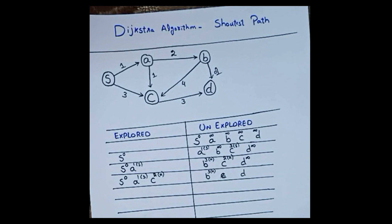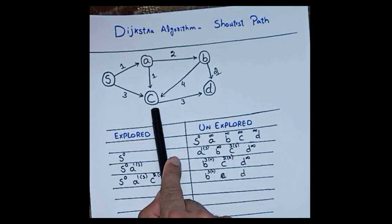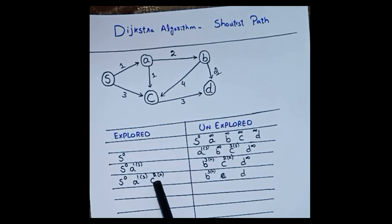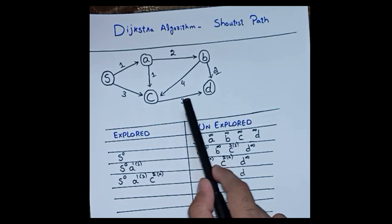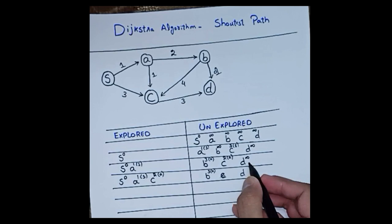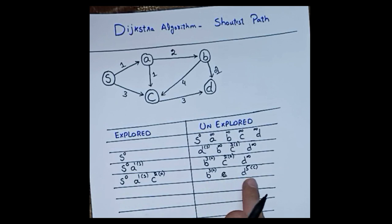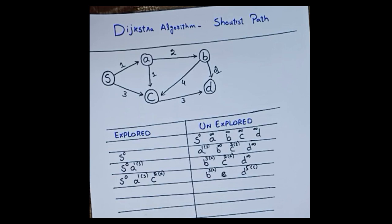What about D? I am standing at C. Is there a direct edge from C to D? Yes. The distance of C is 2 and the edge C to D is 3, so 2 plus 3 equals 5. The previous state was infinity, so I can update it. The new distance of D is 5 and its parent is C. Now out of B (3) and D (5), the minimum is B.